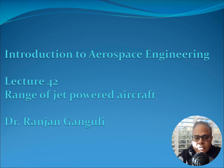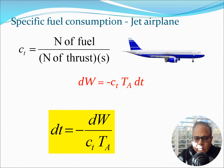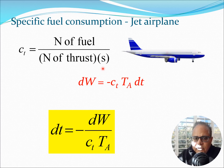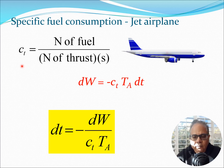Hi students, today we start Lecture 42 and I'm going to discuss the range of jet-powered aircraft. I'm Dr. Ranjan Ganguly. In the previous lecture we discussed CT, which is the specific fuel consumption. CT is defined as newtons of fuel divided by newtons of thrust per second. Note that CT for a jet engine is different from the C we discussed before for propeller aircraft.